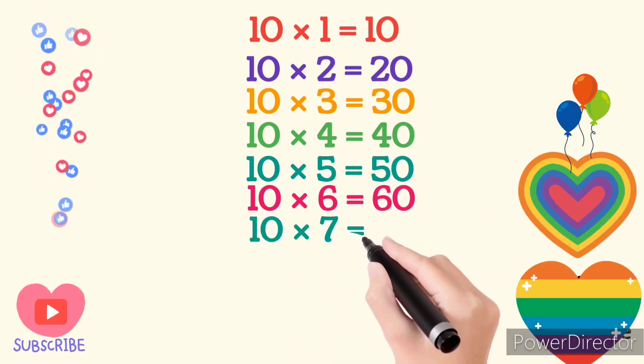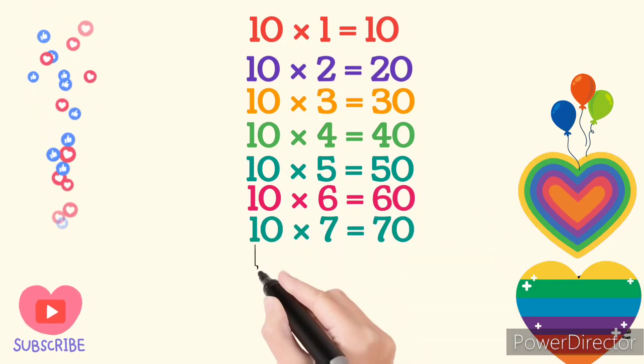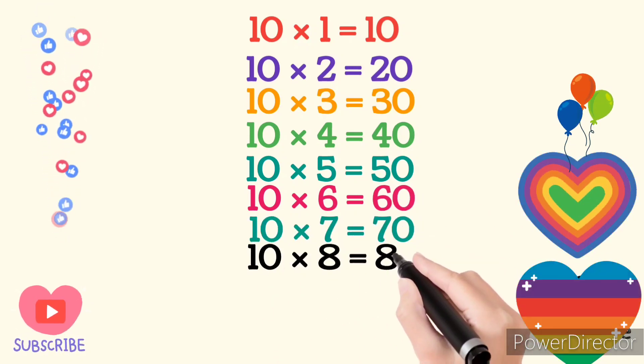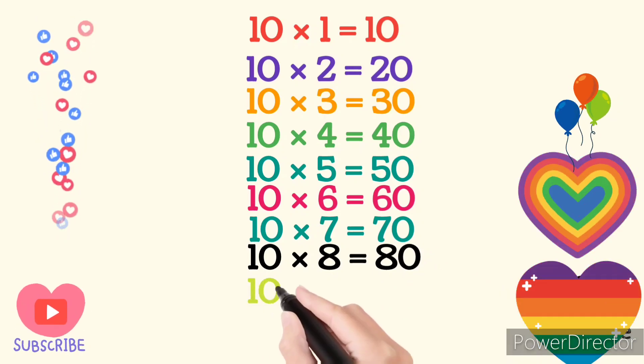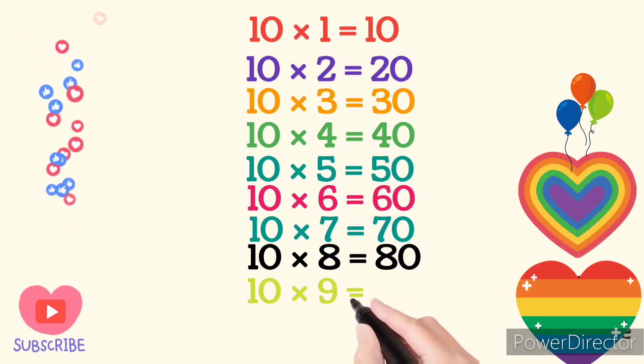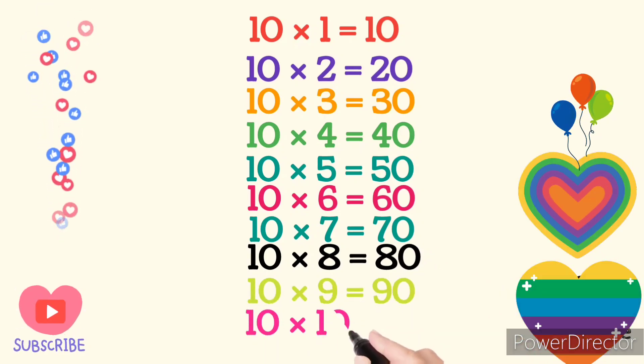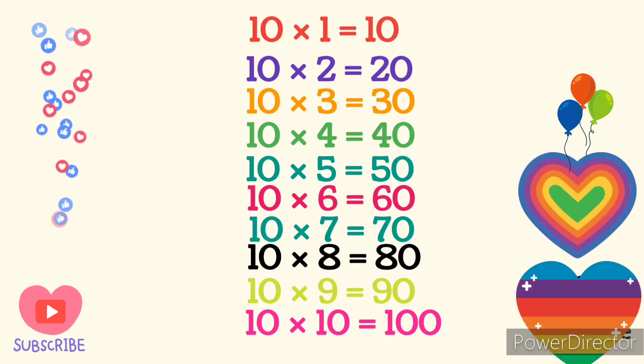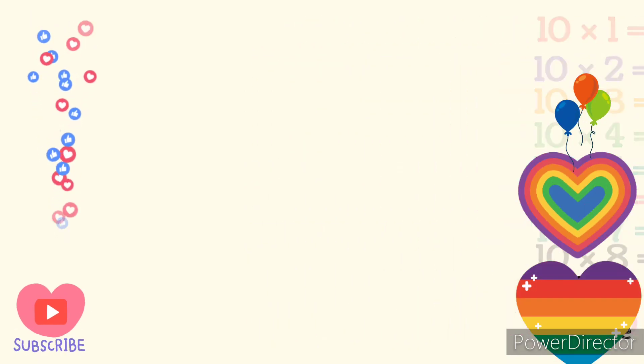10 times 7 are 70. 10 times 8 are 80. 10 times 9 are 90. 10 times 10 are 100. Bye Bye Kids!